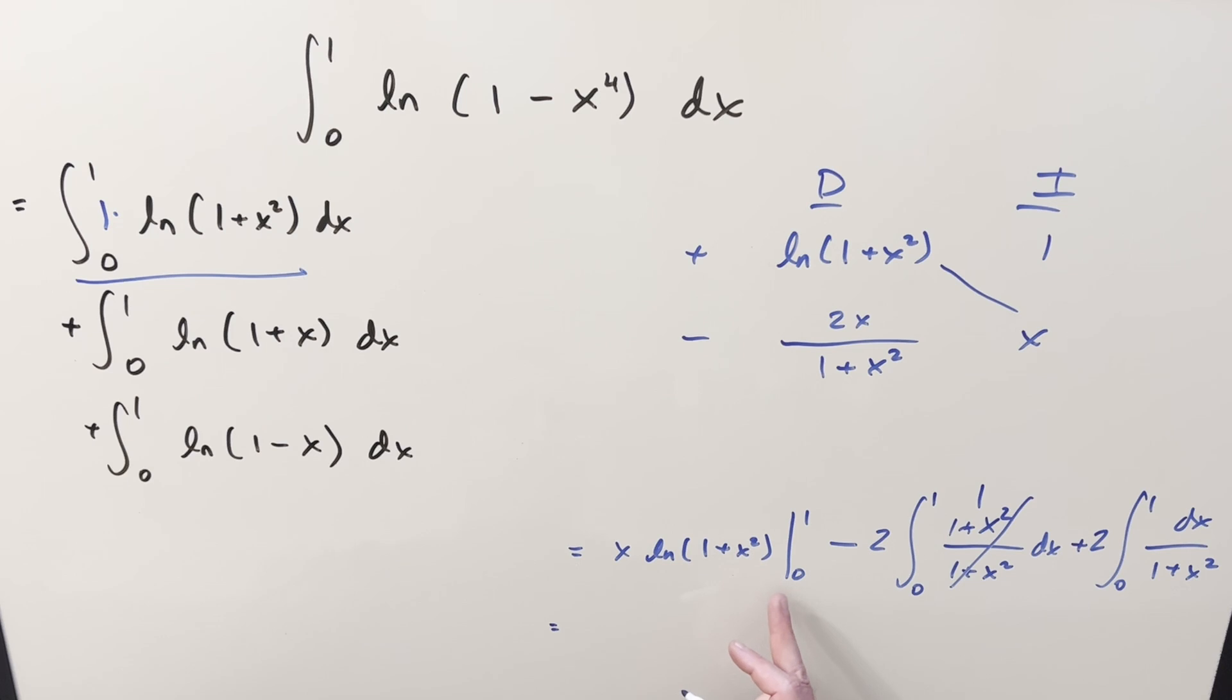Coming down here, when you plug one in, you're going to have one times natural log of two, so we're just going to have natural log of two. You plug zero in, everything's going to be zero, so let's leave that off.